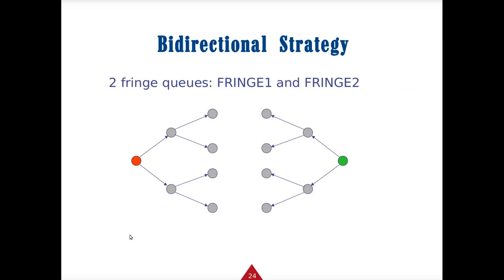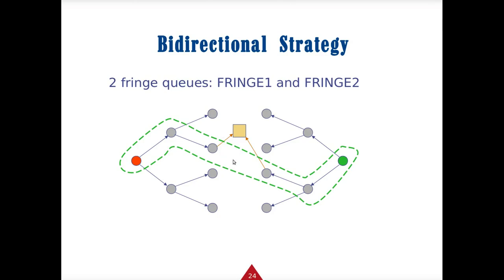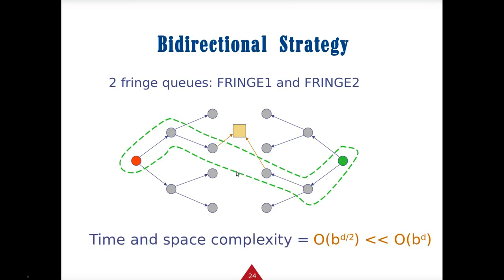Another strategy is bidirectional search: you have two fringe queues — one starting from the initial state and one starting from the goal state — and find the interconnecting node between the quickest paths. Notice the time and space complexity is much faster because it uses half of D. The breadth is effectively cut in half, making bidirectional breadth-first optimally much faster.